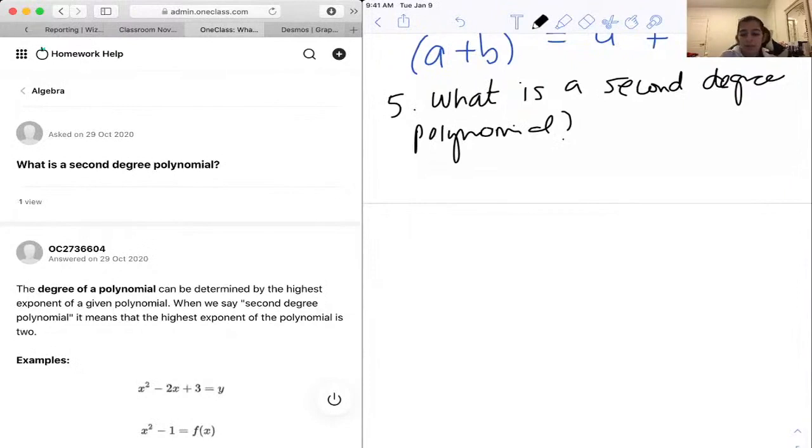So, a second-degree polynomial, we can say that, for example, x squared plus 2 is a second-degree polynomial.